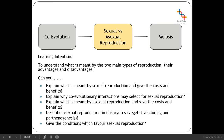You need to be able to explain what is meant by sexual reproduction and give the costs and the benefits, explain why co-evolutionary interactions may select for sexual reproduction, explain what is meant by asexual reproduction and give the costs and benefits, describe the possible methods of asexual reproduction in eukaryotes — essentially vegetative cloning and parthenogenesis — and explain the conditions which favour asexual reproduction.